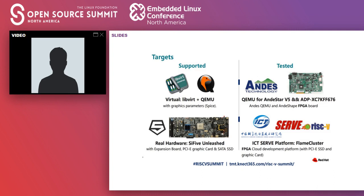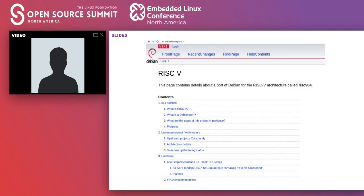That expensive board is not super practical, so one of the other things we can do is use QEMU. QEMU has support for RISC-V, and Alistair from Western Digital has done a really good job getting all that working. Without any hardware, you can go run the Fedora RISC-V port on QEMU on your computer or server. You can also run Debian — Debian also has a port as well.